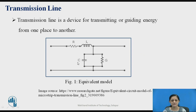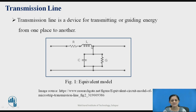You can refer to this figure, which is the equivalent model used for the transmission line. R and L are connected in series, and capacitor and conductance are connected in parallel with the input and output. R and L are denoted as primary constants, whereas C and G are also primary constants. R plus j-omega-L is known as the series impedance, denoted with Z, and G plus j-omega-C is the shunt admittance, denoted with Y. Input is applied at one end and output is taken across the shunt admittance Y.